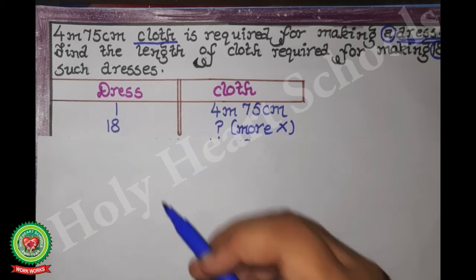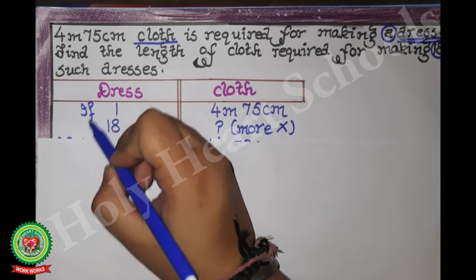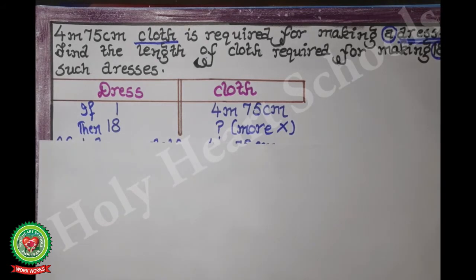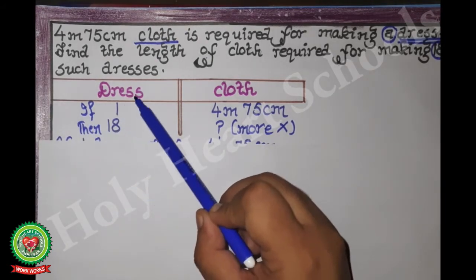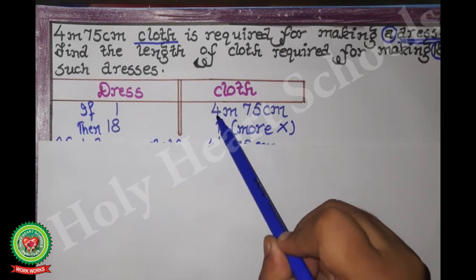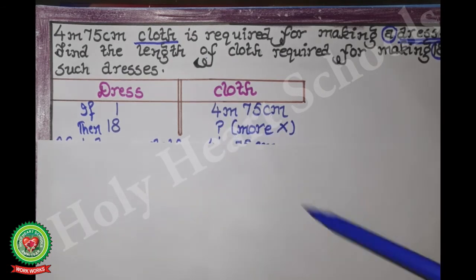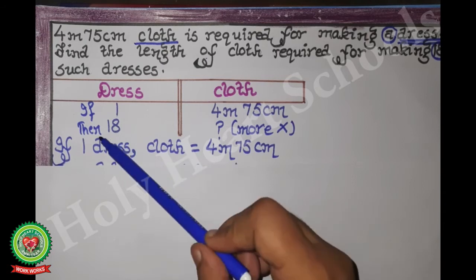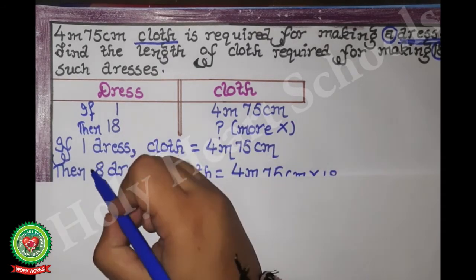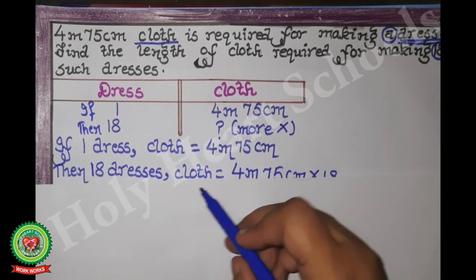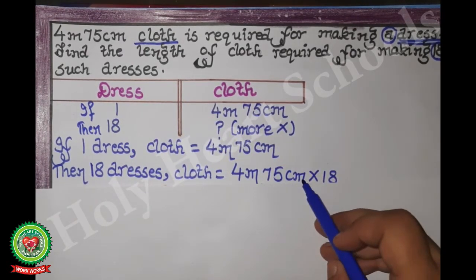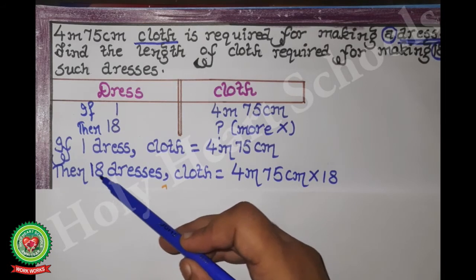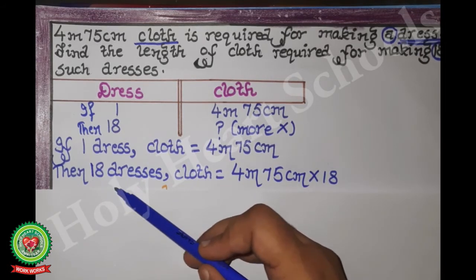If one dress cloth is equal to 4 meters 75 centimeters, then 18 dresses cloth is equal to 4 meters 75 centimeters multiplied by 18. We have to find out the length of cloth required for 18 dresses. The two units given are meter and centimeter, so we write the table: meter, decimeter, and centimeter.